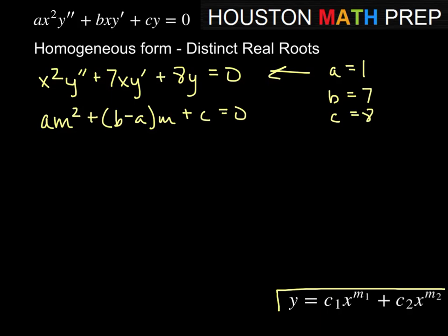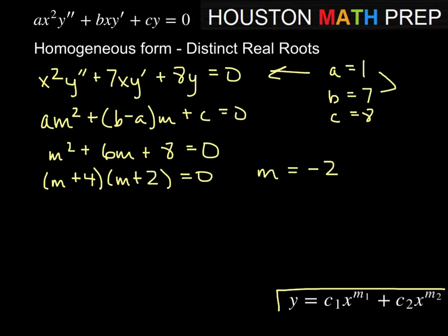According to that, we would get 1m squared plus, b minus a is 7 minus 1, which is 6m, plus c is 8. So we're solving m squared plus 6m plus 8 equals zero. Here I've written this so it factors: m plus 4, m plus 2 equals zero. Our answers are m equals negative 2, negative 4. Based on this form for our solutions, y is a linear combination of x to the minus 2 plus some multiple of x to the minus 4.